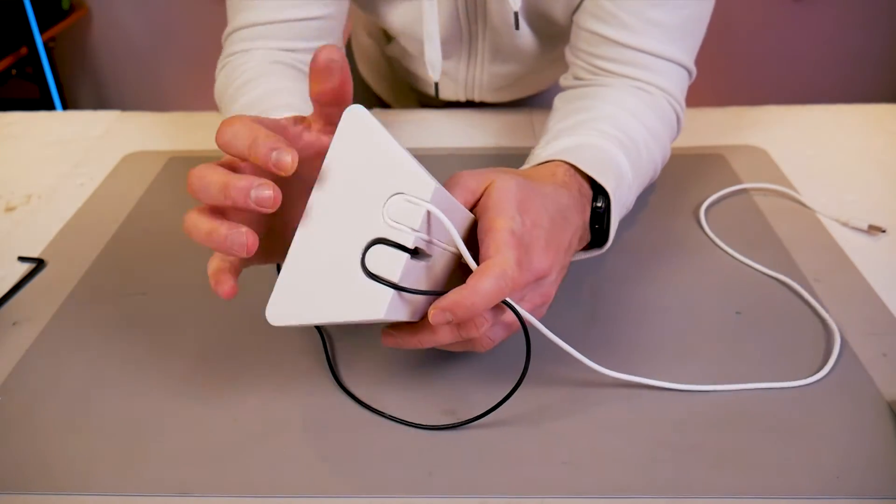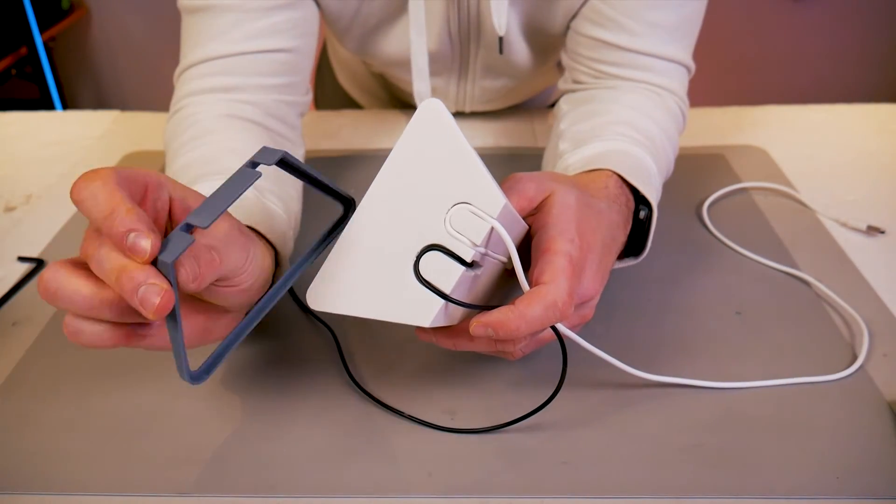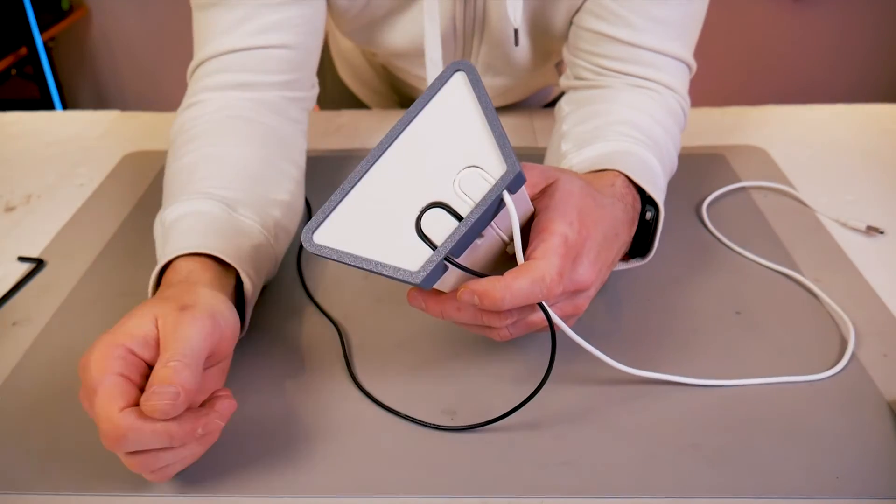And then we can put it through the strain relief at the bottom and both cables will exit out the back. This is where we can finally add our trim piece and it simply just slips onto the bottom.